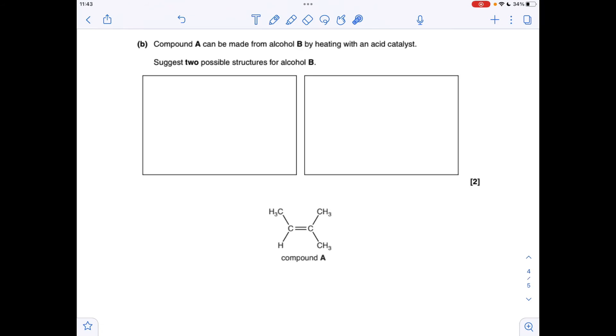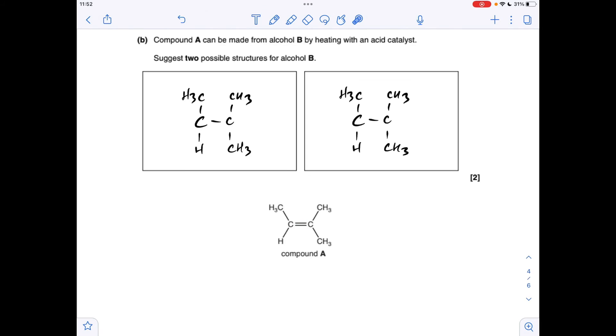Moving on to part B, so we've got to come up with the structure of two alcohols that could generate compound A by heating with an acid catalyst. Well, when you're heating alcohol with an acid catalyst, you remove the water, you dehydrate it, so you're going to remove an H and an OH atom and create the carbon-carbon double bond. So obviously this isn't the final answer. All I've done is broken that double bond, and we're going to put the H and the OH on. So we can go H, OH, that way around, or we can go OH, H, that way around.